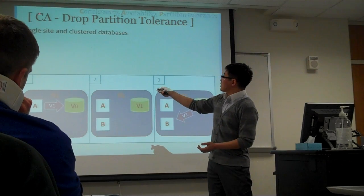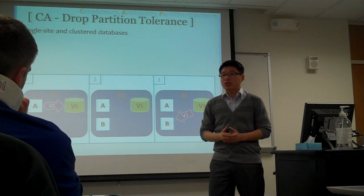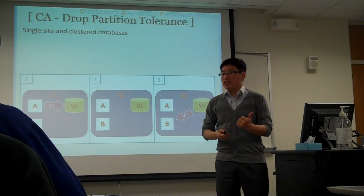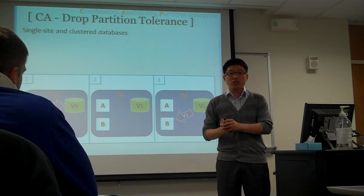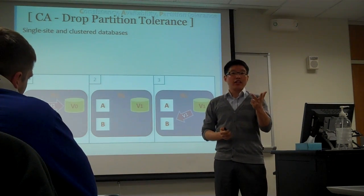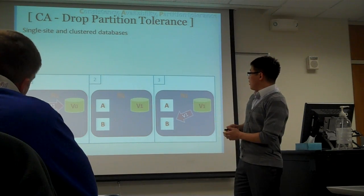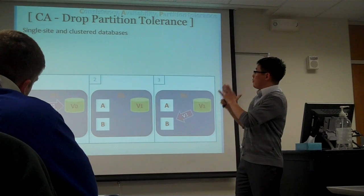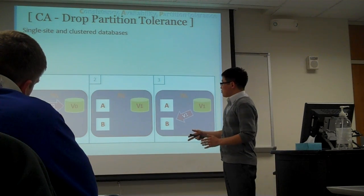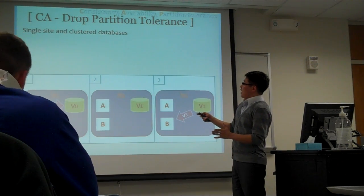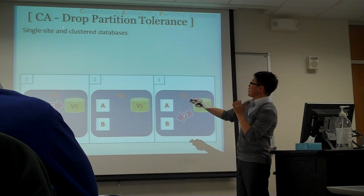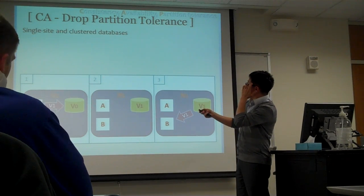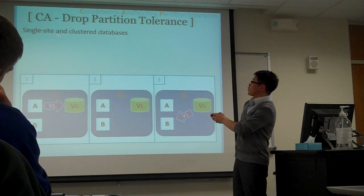Think about the system that guarantees consistency and availability — the traditional relational database management system. Everything is designed based on ACID, which stands for atomicity, consistency, isolation, and durability. These properties guarantee consistency. Also, in the traditional database system, they focus on availability instead of partition tolerance. The relational database system focuses on consistency and availability.